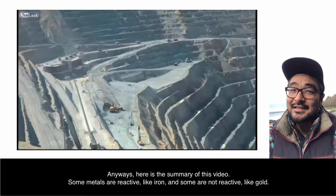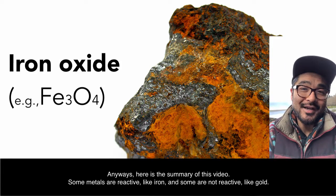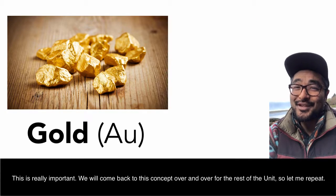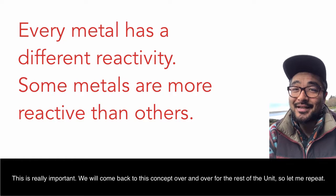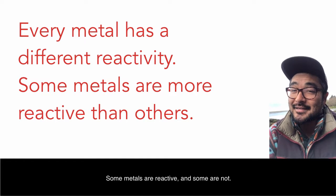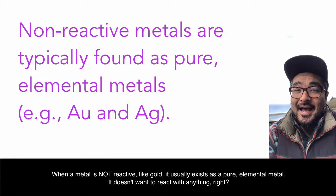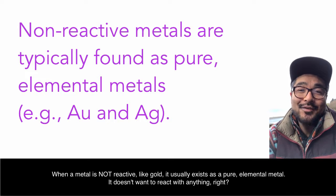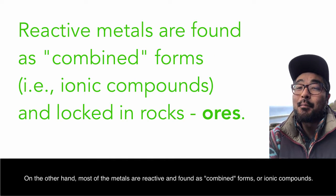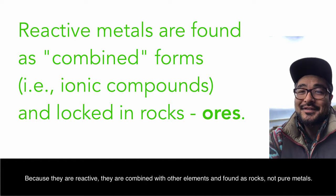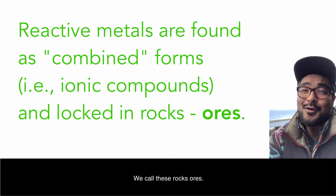Here is the summary of this video. Some metals are reactive, like iron, and some are not reactive, like gold. When a metal is not reactive, it usually exists as a pure elemental metal — it doesn't want to react with anything. On the other hand, most metals are reactive and are found as combined forms or ionic compounds. Because they are reactive, they are combined with other elements and found as rocks, not pure metals. We call these rocks ores.